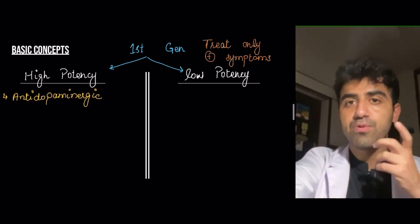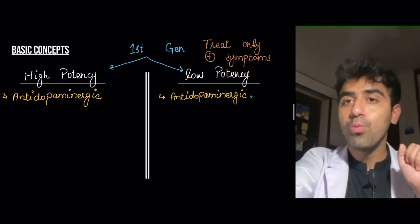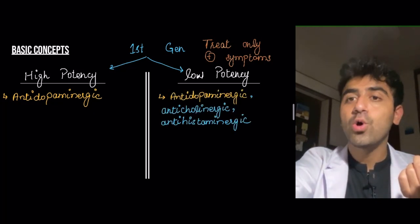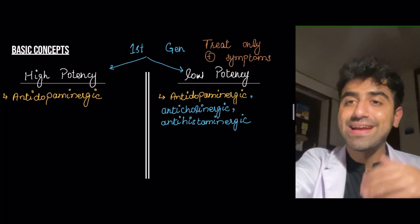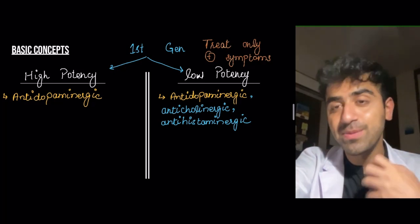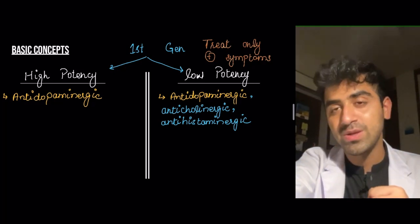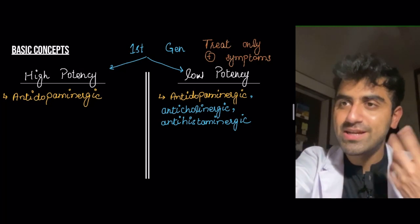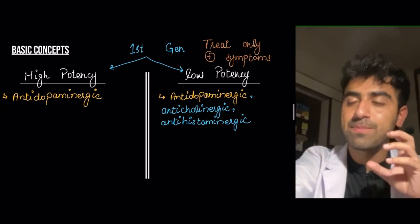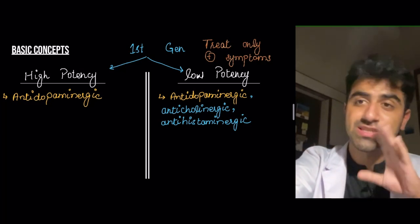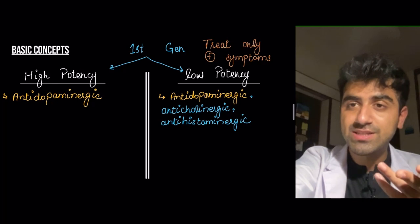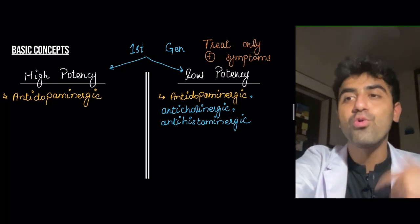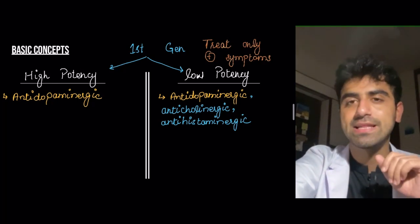First generation is divided into high potency and low potency. High potency is anti-dopaminergic. Low potency is anti-dopaminergic but also has anticholinergic and antihistaminergic effects. Anticholinergic means it antagonizes your parasympathetic innervation. Antihistaminergic effects mean the patient may be more predisposed to sedation and similar effects.